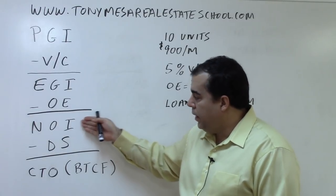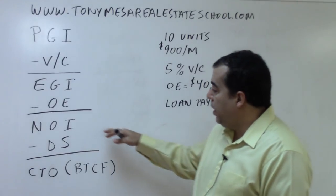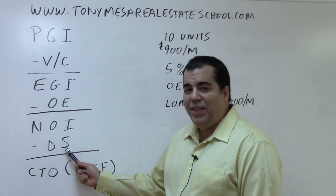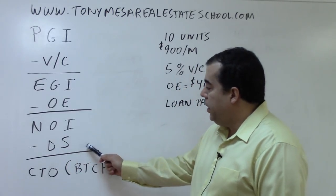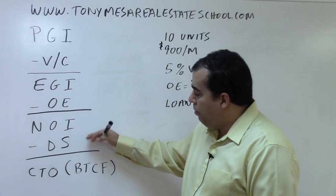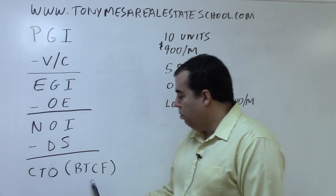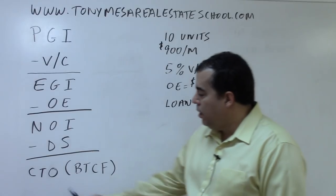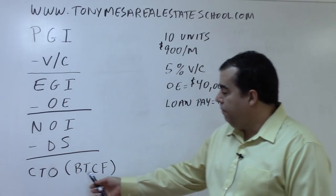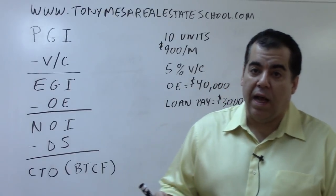If the property is bought with cash, the analysis would end at the NOI. But most properties have some type of financing, so there is DS — Debt Service — which is the yearly loan payment. When you take the NOI and subtract the debt service, that gives you what is called the cash throw-off, also called the before-tax cash flow. That's how much cash the property is throwing off after all the expenses and debt service, before tax considerations.